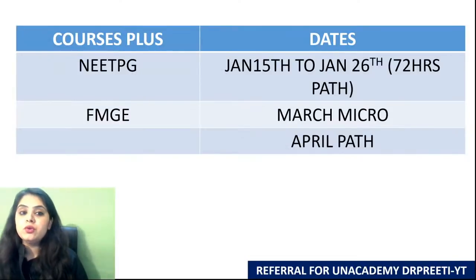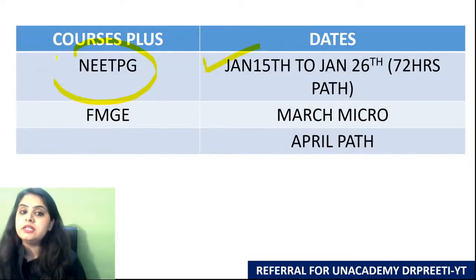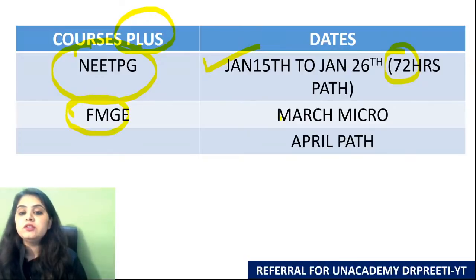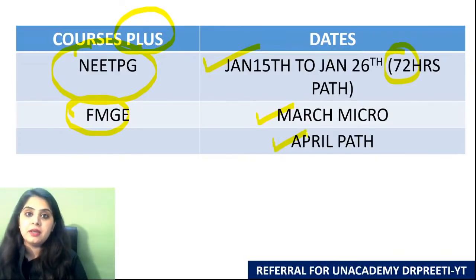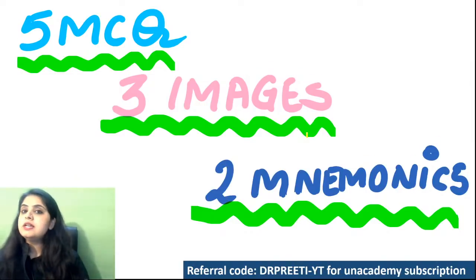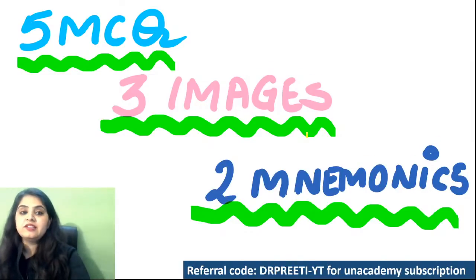For those who don't know, we have a course starting on January 15th, which is a NEAT PG course for the Plus students, a total of 72 hours. For the FMG students, we have a course of micro in March and pathology in the month of April. So let's begin with our five MCQs. I'll put up an MCQ, quickly give me an answer, we'll do a one-slide description and move forward.